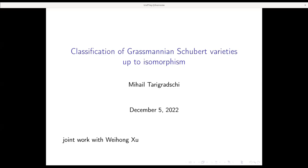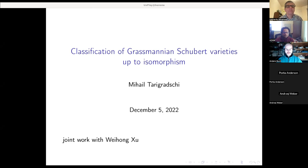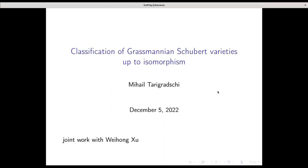For now, we will continue with the next speaker, which is Mihail Tarigracci from Rutgers. He will speak about classification of Grassmannian Schubert varieties up to isomorphism. Thank you, Anders. Thank you, everyone, for the invitation to talk. I will speak about classification of Grassmannian Schubert varieties up to isomorphism. The work I present here is in a joint paper with Weihong Xu. Let's get started.